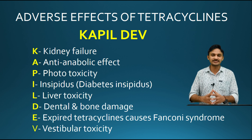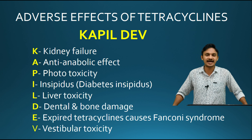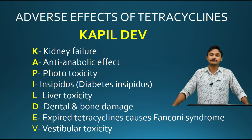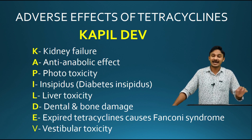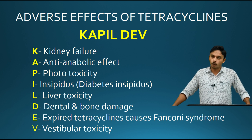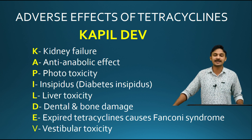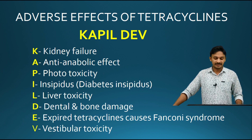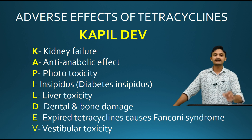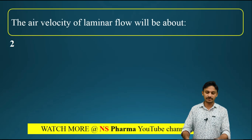V represents vestibular toxicity, which is maximum with minocycline. To summarize the KABIL DEV mnemonic: K=kidney failure, A=anti-anabolic effect, B=photosensitivity, I=diabetes insipidus, L=liver toxicity, D=dental and bone defects, E=expired drug causing Fanconi syndrome, V=vestibular toxicity. This is the code for studying adverse effects of tetracycline.